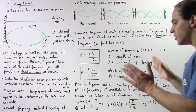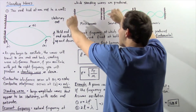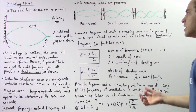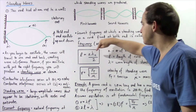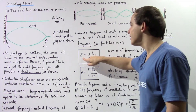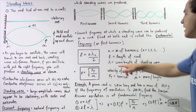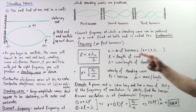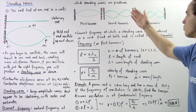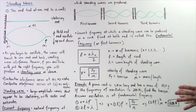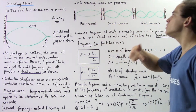For a standing wave on a string fixed at both ends, the general formula relating the wavelength λ of the standing wave to the total length L of the string is: L = nλ/2, where L is the length of the cord, λ is the wavelength of the standing wave, and N represents the harmonic number. So for the first harmonic where N equals one, the wavelength is two times the length of the cord.